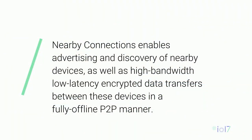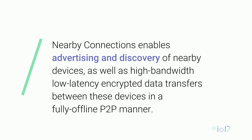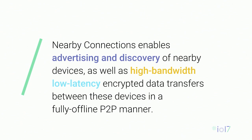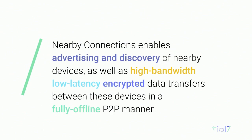Nearby Connections enables the advertising and discovery of nearby devices, as well as high bandwidth, low latency, encrypted data transfers between these devices in a fully offline P2P manner. It achieves this by using a combination of classic Bluetooth, BLE, and Wi-Fi hotspots, leveraging the strengths of each while circumventing their respective weaknesses. Bluetooth has low connection latency but also low bandwidth. Wi-Fi hotspots have slightly higher connection latency but much higher bandwidth. So we connect over Bluetooth and start transferring data instantly, while in the background bringing up a Wi-Fi hotspot. When that's ready, we seamlessly transfer your connection from Bluetooth to Wi-Fi with absolutely no work required by the app developer.